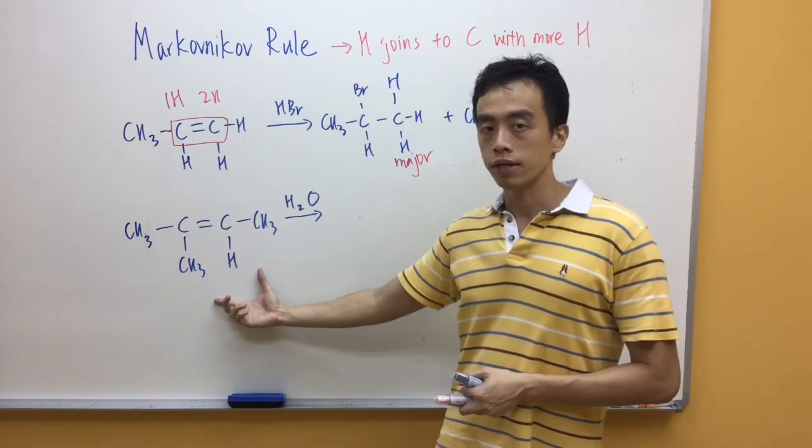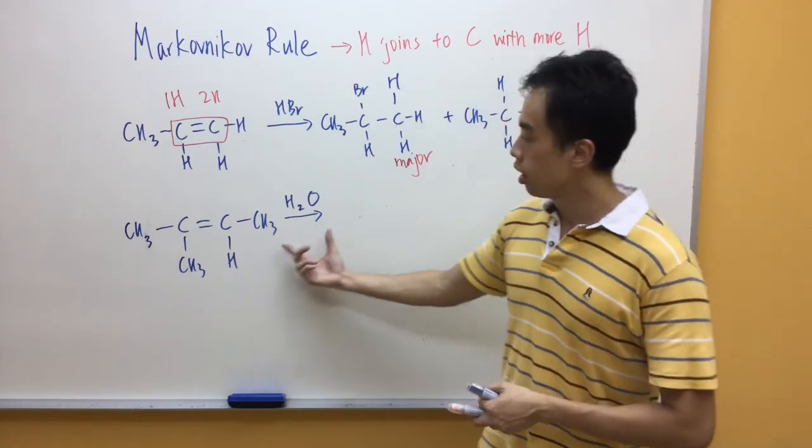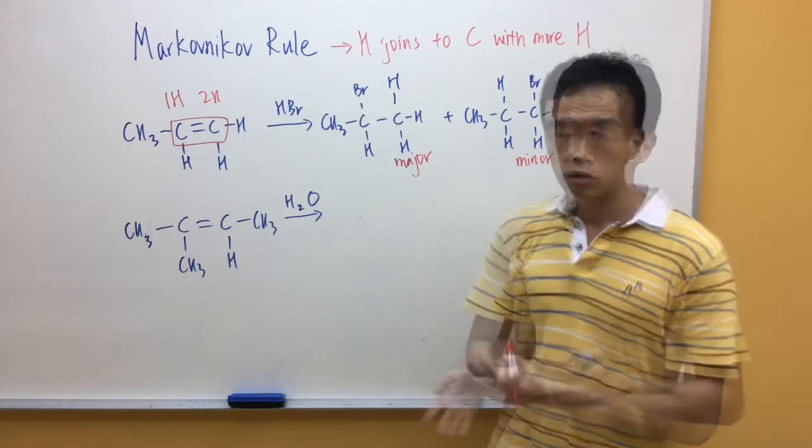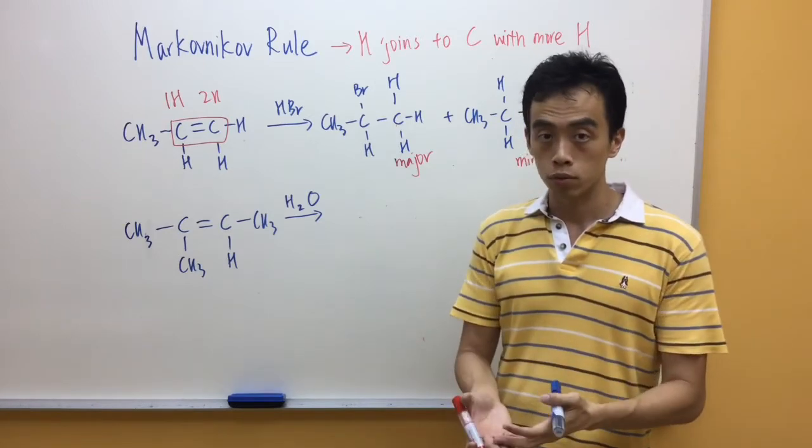Now for the second example, the idea is the same, you have this alkene, you are adding water, so basically you are adding H and OH. So where would the hydrogen go to, to give us the major product?